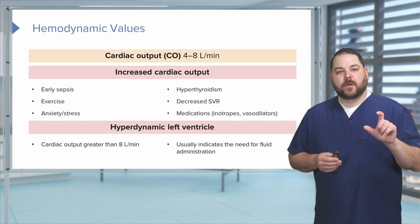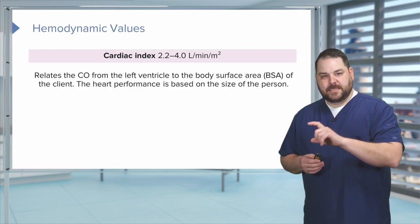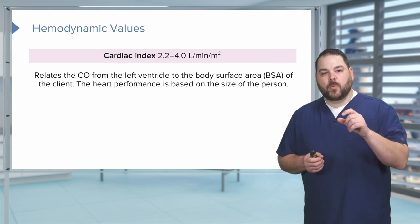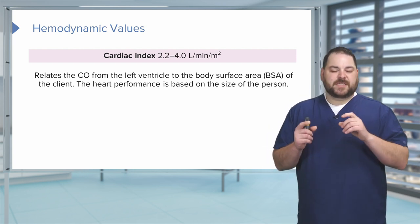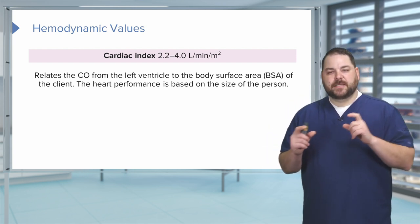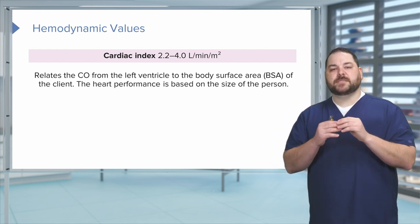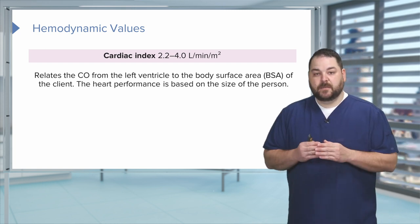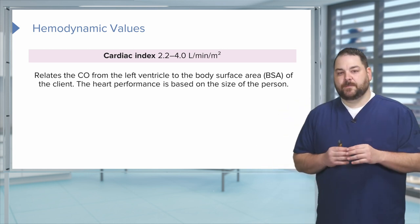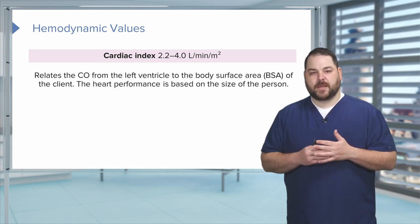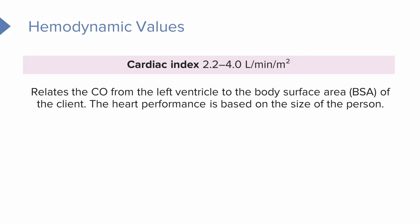Now we've talked about cardiac output — let's talk about cardiac index. The normal cardiac index is 2.2 to 4.0 liters per minute per meter squared. The difference between cardiac output and cardiac index is that cardiac index takes into account a person's body surface area, which is a calculation based on their height and weight. You enter it into the computer and it gives you a body surface area. Cardiac output alone just tells us how many liters per minute the heart is pumping — we don't know if it's enough for the patient.